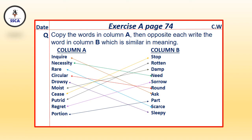Students, open Exercise A on page 74. Let's see what we will do in this exercise. Copy the words in Column A, then opposite each write the word in Column B which is similar in meaning. Aap ke paas Column A aur Column B mein words diye gaye hain. Aap ne match karne hain jo ek doosre ke similar words hain.